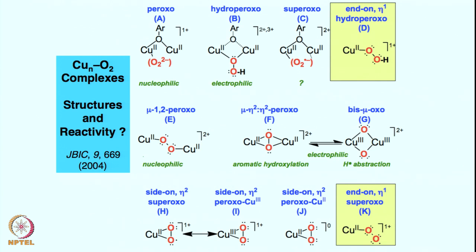There could be a number of other species forming. More importantly, there is also a possibility of forming a copper(II) hydroperoxo species upon abstracting a hydrogen atom by the copper superoxo intermediate. One proton and one electron — that is, a hydrogen atom or hydrogen radical H• — can give rise to the copper(II) hydroperoxo species. These are the two mononuclear species we are going to mainly look at.